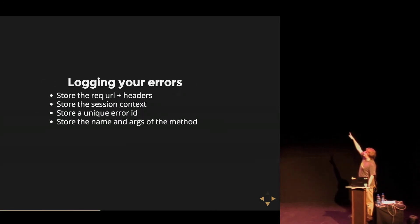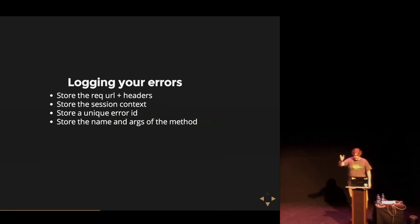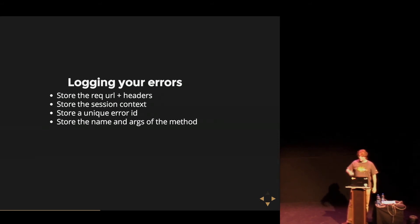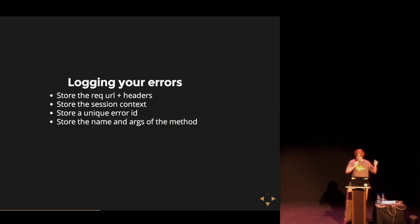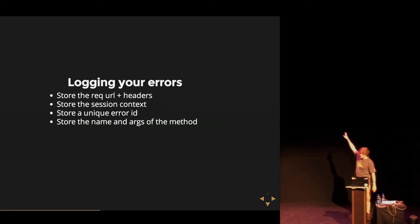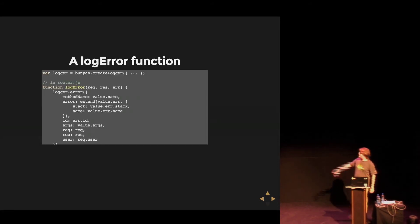One of the simplest ways to deal with errors is to log them. Bunyan is pretty awesome. What we literally do in production is log the request. If you have the session context, log that. If you give every error a unique ID, that's fantastic — because then when you give the user a 500 page with that ID and you get a screenshot from a user report, you know exactly what's wrong. If possible, storing the name and arguments of whatever business or application logic was invoked is fantastic as well.